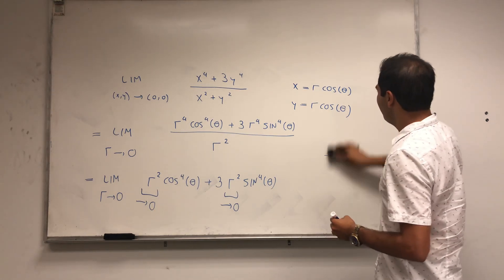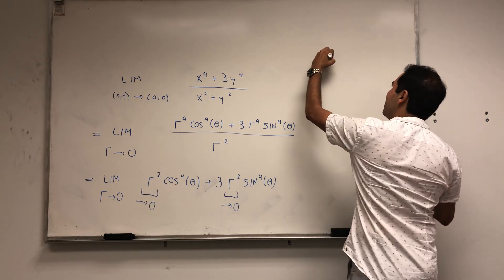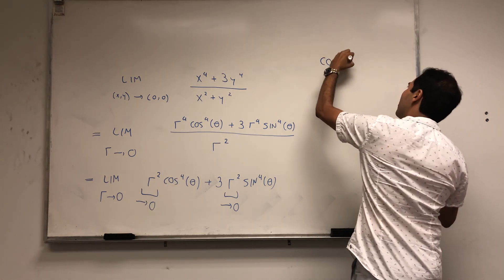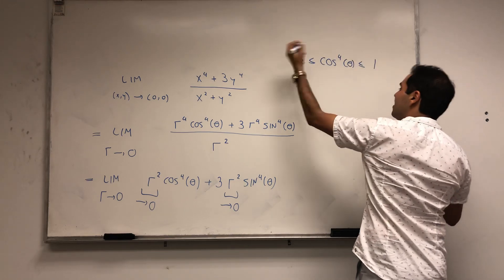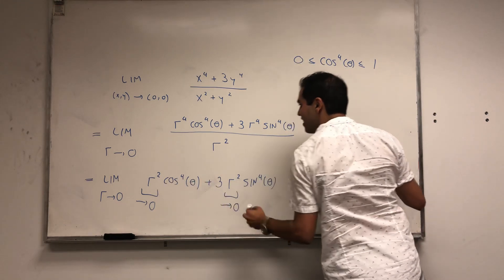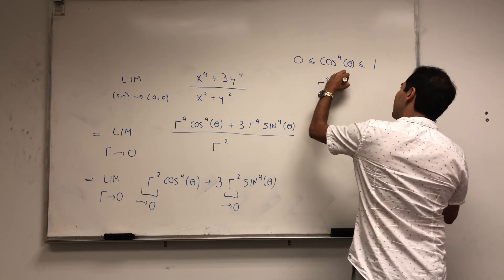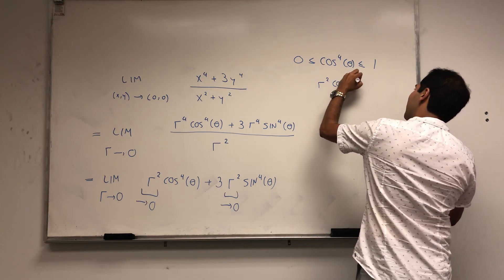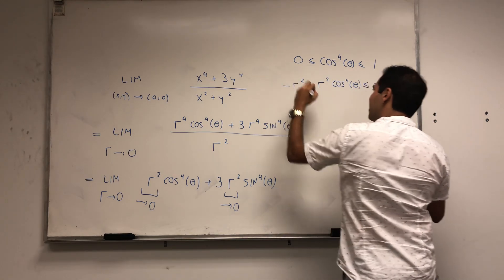But let me just be a little bit more precise. So as I mentioned, cosine to the fourth theta is between 0 and 1. And then multiply this by the positive quantity r squared. So r squared cosine to the fourth theta is between r squared and minus r squared.